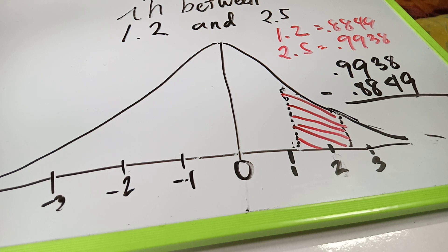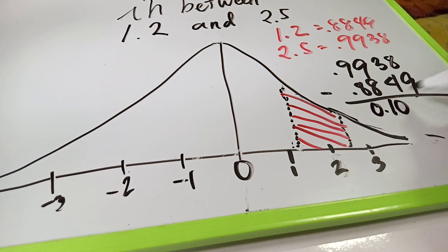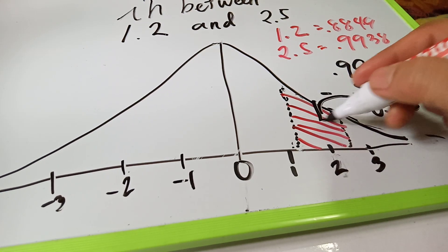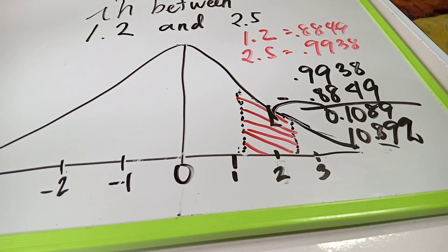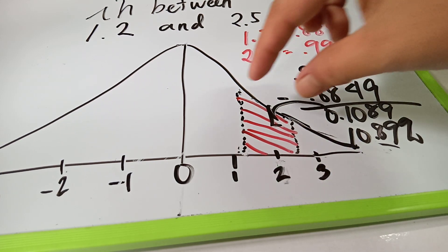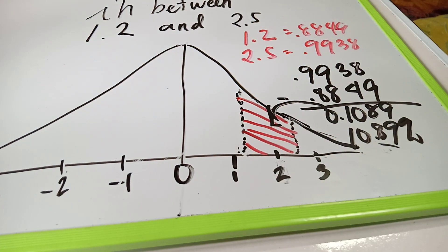So 0.9938 subtracted from 0.8849 gives us 0.1089. This area is 0.1089, or 10.89%. All you have to do is subtract the higher value minus the lower value to find the area of the region between two Z-scores.